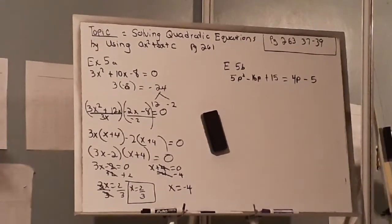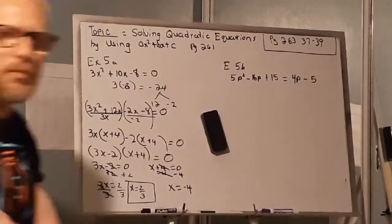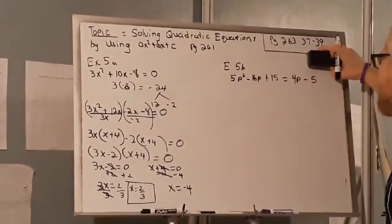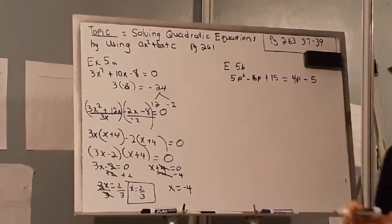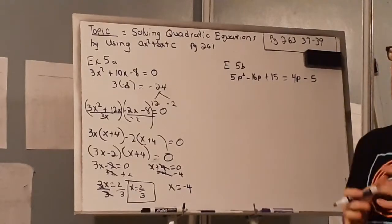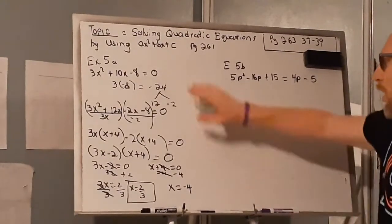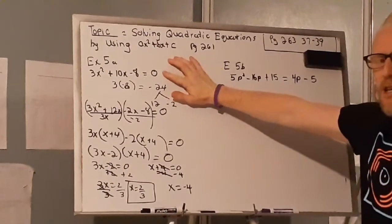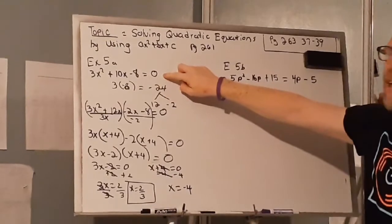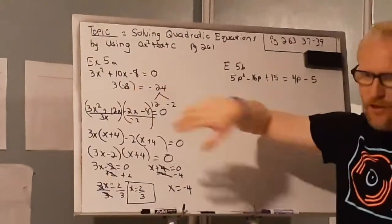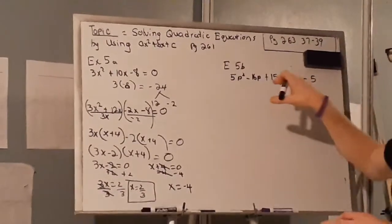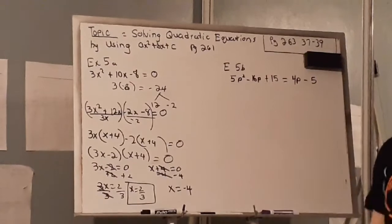There you go — that is my answer for example 5a. I'll give you a minute to look at it and then I'm going to move on to example 5b, which will basically be the end of our video. In example 5b it's a little different because the equation doesn't equal 0 — it equals another expression. That means I have to first combine like terms, because I always want my equation to equal 0.